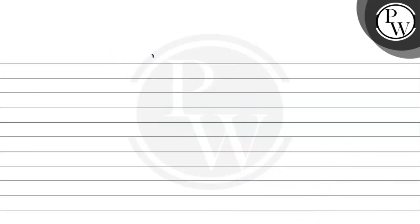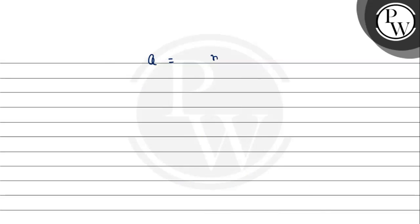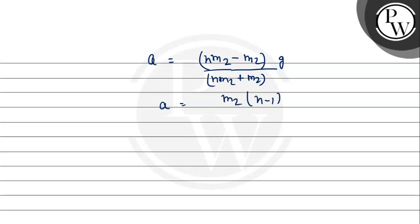Substituting m1 = n·m2, we get: a = (n·m2 − m2)/(n·m2 + m2) × g. The m2 cancels, giving a = (n − 1)/(n + 1) × g.